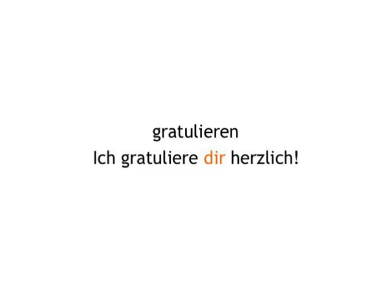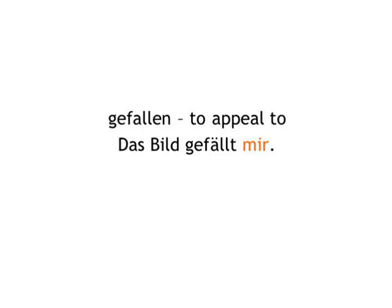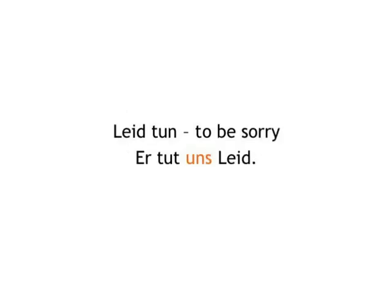There are also some dative verbs that indicate an emotional response. Verbs such as gefallen or leidtun. Let's take gefallen — to appeal to: Das Bild gefällt mir — literally, 'the picture appeals to me.' There's no direct action; the quality of the picture appeals emotionally to me. Similarly with leidtun — to be sorry — we're talking about feeling compassion rather than physical pain: Er tut uns leid. We're sorry for him. Literally, 'he makes us suffer.' His situation arouses compassion in us. There's a role reversal: the person we feel sorry for is the subject of the verb — he causes us to feel compassion, so we're the indirect object.